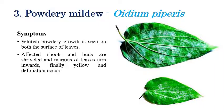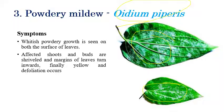The third one is powdery mildew, which is caused by Oidium piperis. White powdery mycelial growth can be seen on both the lower and upper surfaces of the leaf. In later stages, the leaves turn yellow in color and defoliation of leaves will occur.